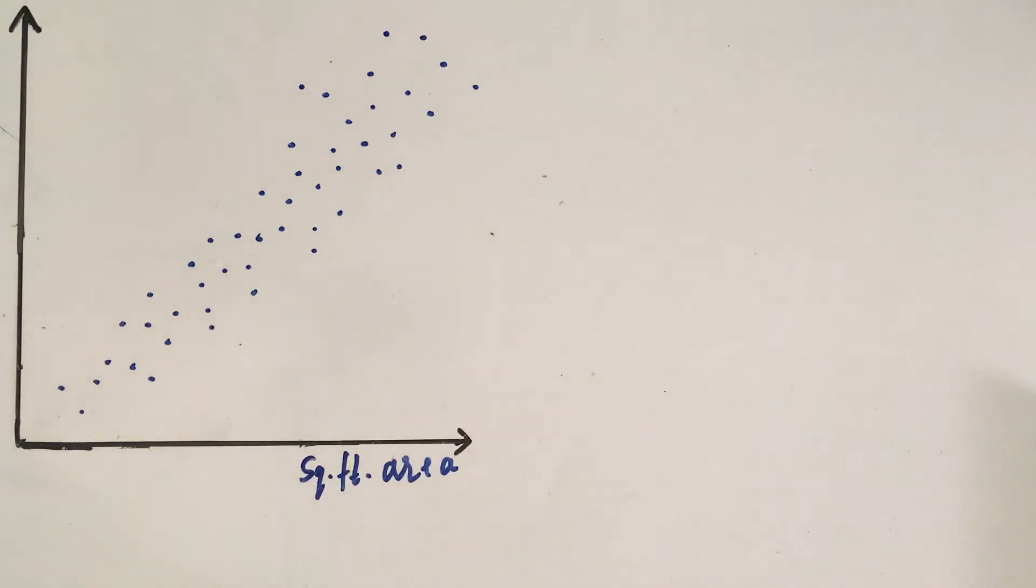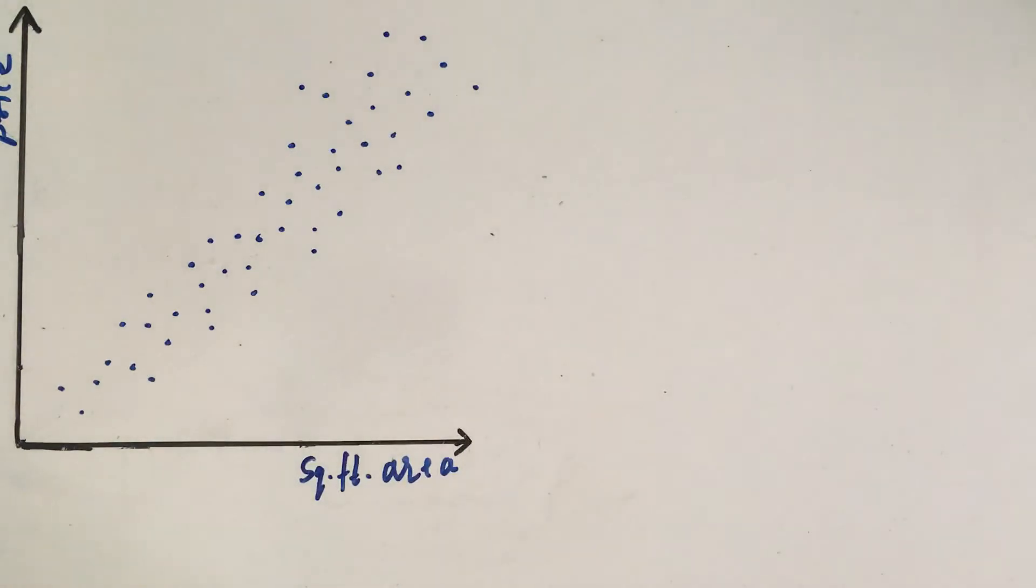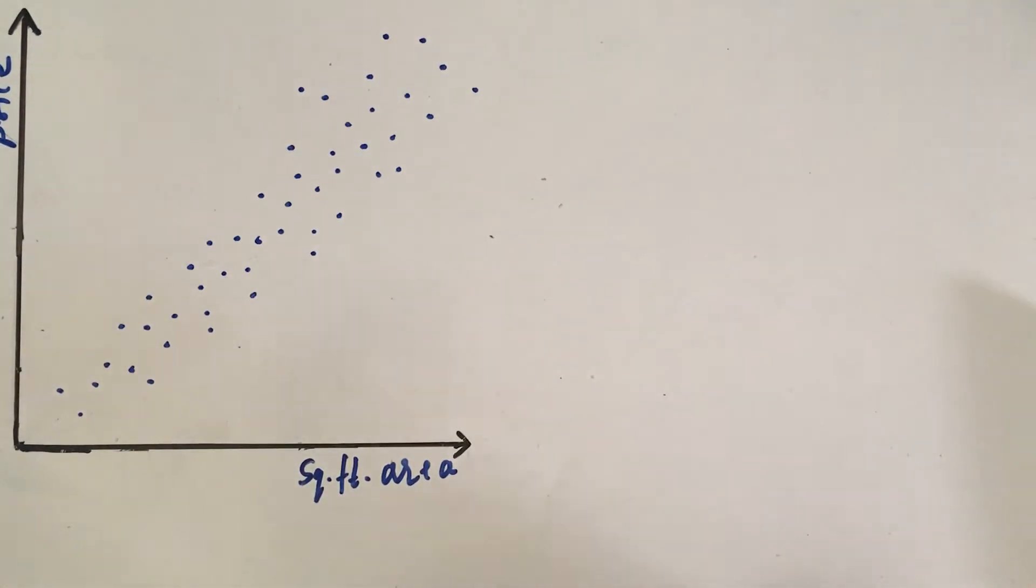Here, let us take again the data set of house prices when on the X side, we have square foot area of the house and on the Y side, we have the price of the house. It is a single variable data set. Now, let us do something very stupid. Let us draw a line randomly, like somewhere, anywhere, here.